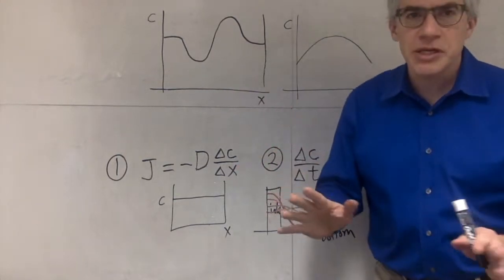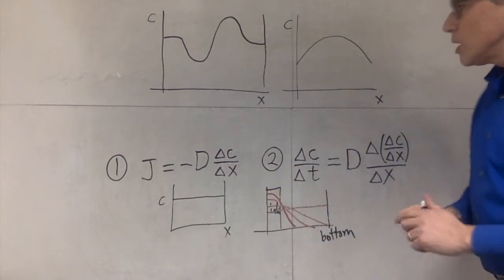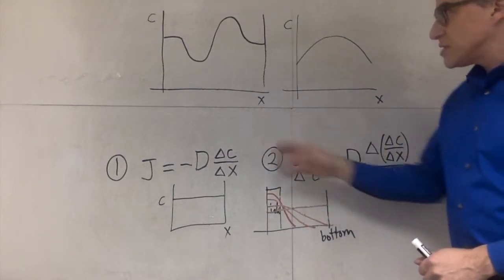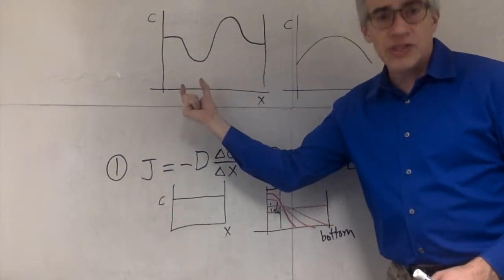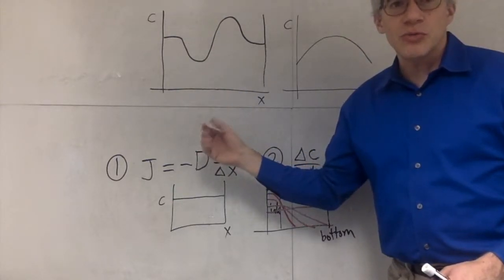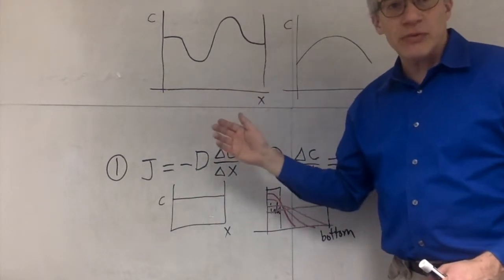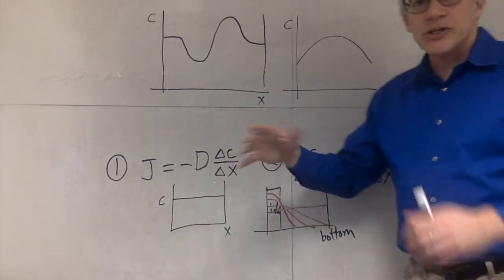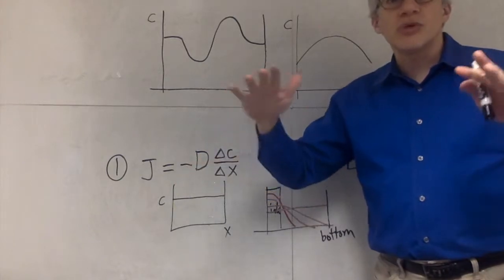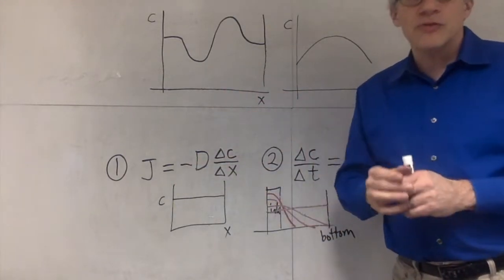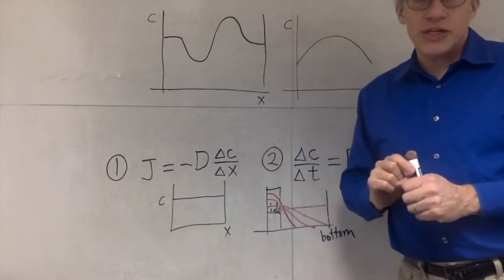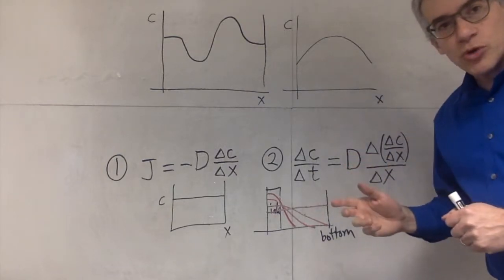Fick's second law is harder to describe. It has to do with the curvature of the concentration versus time graph. You won't have to compute anything, but you may have to draw a picture. What it effectively says is the more sharply curved this is, the faster it's going to even out. If it's too low, it'll move up. If it's too high, it'll move down. Places where it's gently curved will do it more slowly. Places where it's sharply curved, it will happen more quickly.